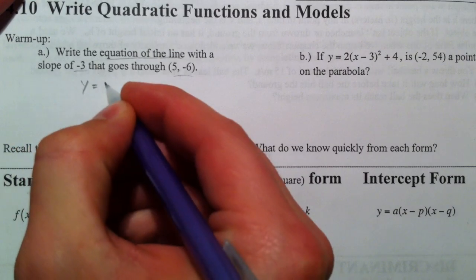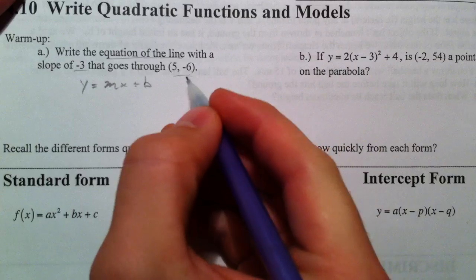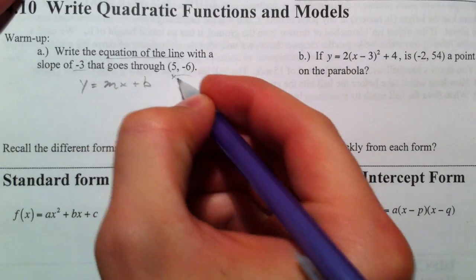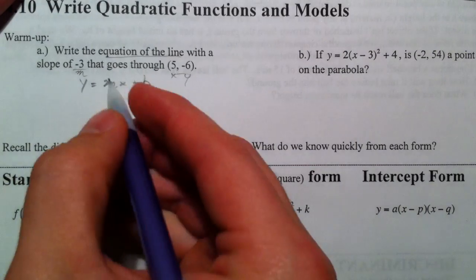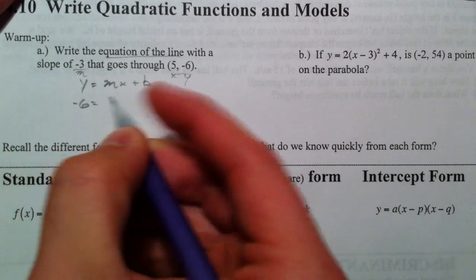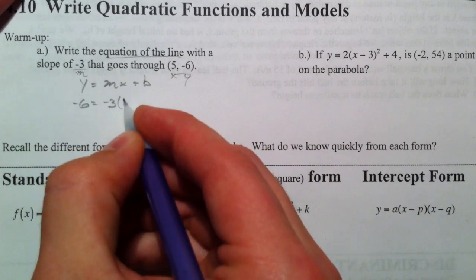Most of us would write out y equals mx plus b, I think, and plug in what we know. If this is x and this is y, and this is our slope being m, we would know negative 6, our slope is negative 3, and our x is 5.